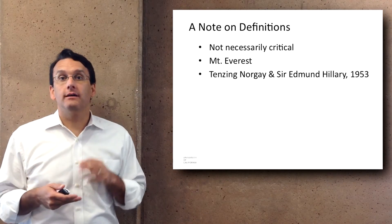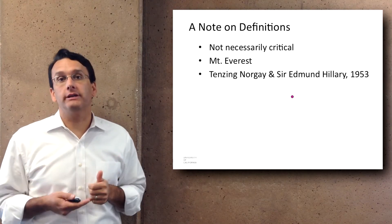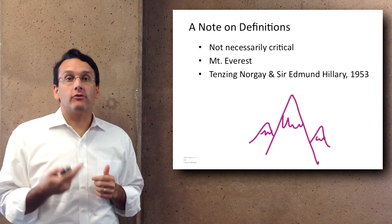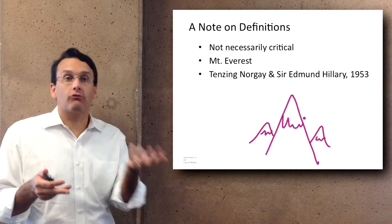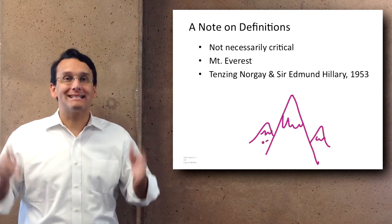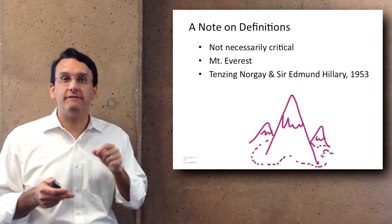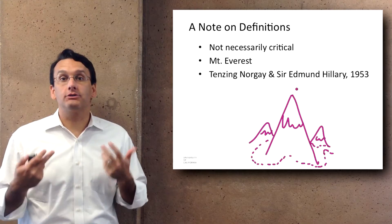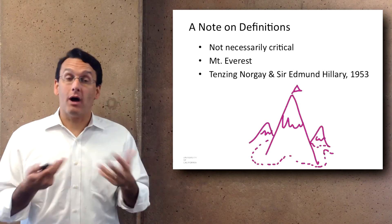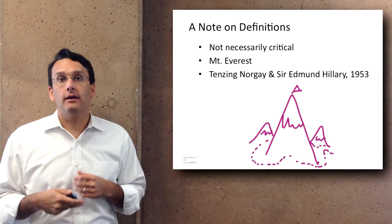Nevertheless, definitions are easy to get obsessed with, and they aren't necessarily critical. For example, Mount Everest is the tallest mountain in the world — everybody agrees. But it's hard to define Mount Everest exactly; at some point there's a rock that may or may not be part of it. Despite that imprecision, it's pretty clear that Tenzing Norgay and Sir Edmund Hillary climbed it in 1953. So while thinking through your definition is important, you shouldn't get too bogged down in definitional fights.